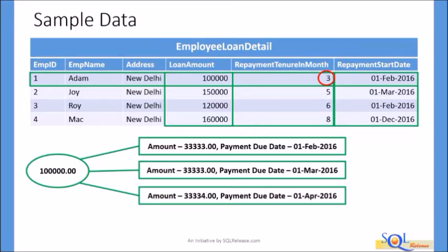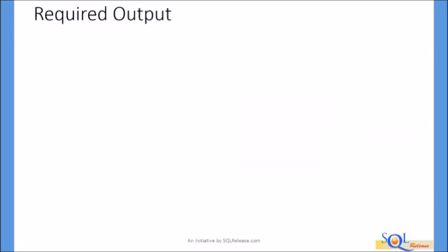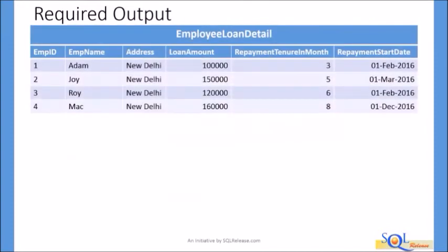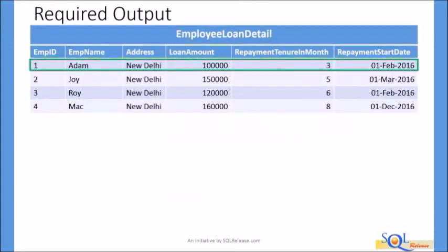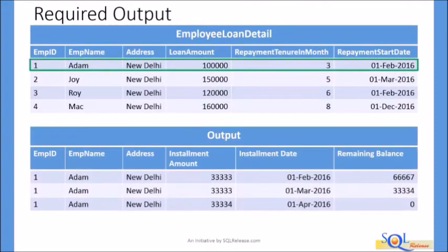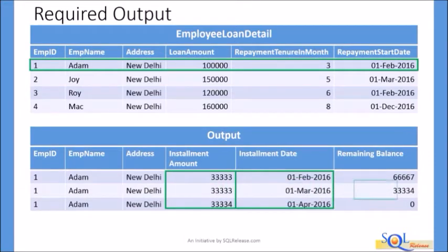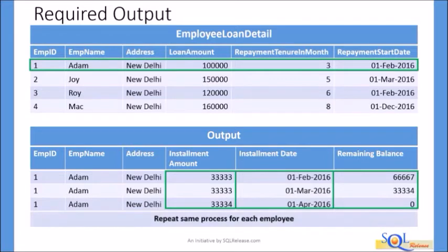So for the first row of the Employee Loan Detail table, we will have three rows in the output. This output has installment amount, installment date, and remaining balance columns along with EMP ID, EMP Name, and Address columns. The same process needs to be repeated for each row of the Employee Loan Detail table.